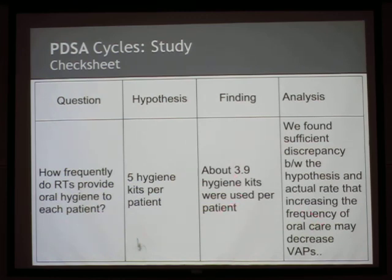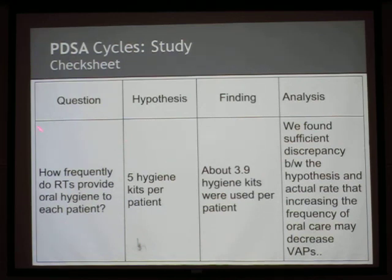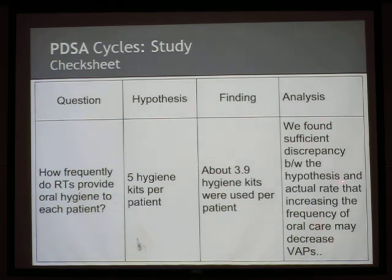Here's what we found using the check sheet template: our question was what is the rate, answered with the check sheet. Our hypothesis was five hygiene kits per patient per day; our finding was actually less than four. So there was a gap — probably enough of a gap that we could do better. Our hypothesis of five wasn't necessarily the ideal number, and we'll see that the actual goal was quite a bit higher. This is the new data from the 'Do' step. You compare hypothesis to finding and produce an analysis — that's the contribution of the 'Study' step.